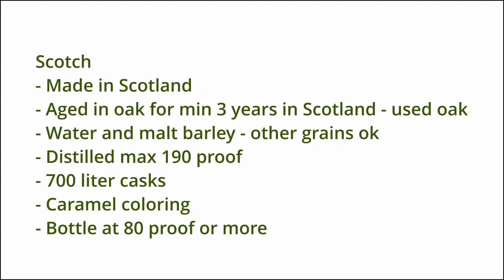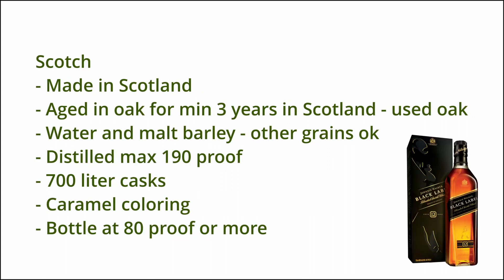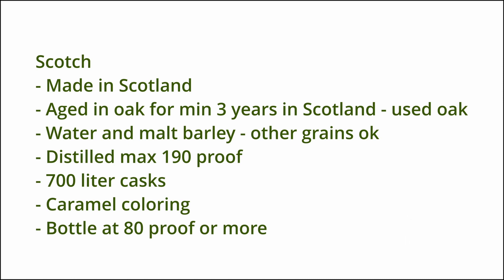Scotch whiskey is made in Scotland and aged in oak for a minimum of three years. Usually used oak is used, whereas in the U.S. new oak is required. The main grain is malted barley, though other grains are also permitted. It is distilled to a maximum of 190 proof, aged in 700-liter casks, may use caramel coloring, and is bottled at 80 proof or more.